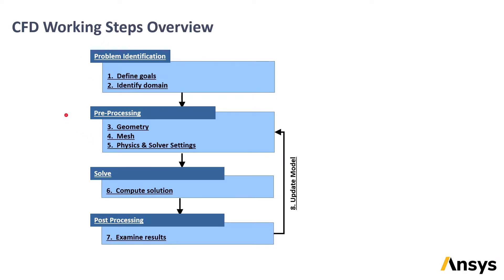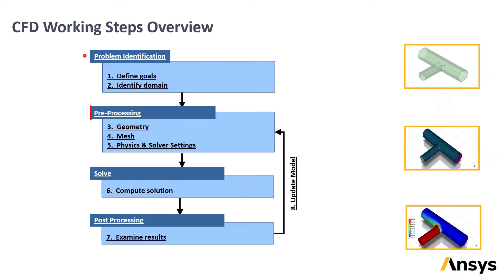The first stage is problem identification, and it happens before you open any software. Although no software is involved here, it plays an important role in the overall success of any CFD project. The remaining stages are pre-processing, solving, and post-processing, which is where ANSYS software comes in. Each individual step is described in its own slides.